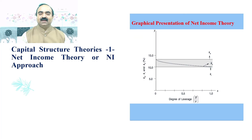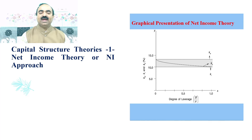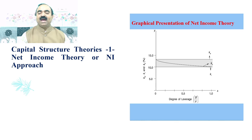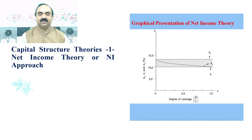Dear students, in this slide I have given a graphical presentation of net income theory. We can observe that the degree of leverage is taken on the x-axis, while the cost of equity capital KE, cost of debt KI, and overall cost of capital in percentages are taken on the y-axis. We can observe that as the degree of leverage increases, the overall cost of capital is declining.